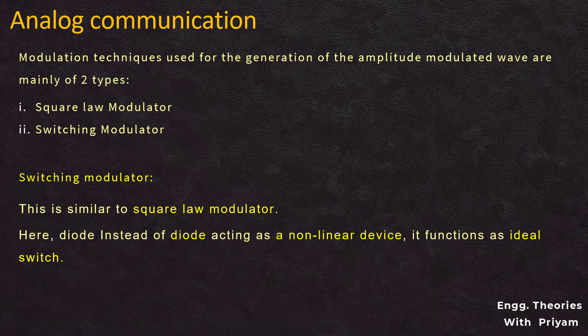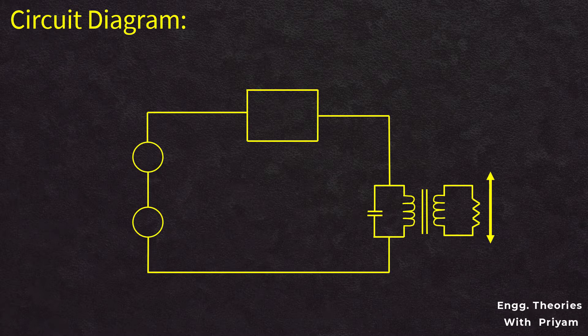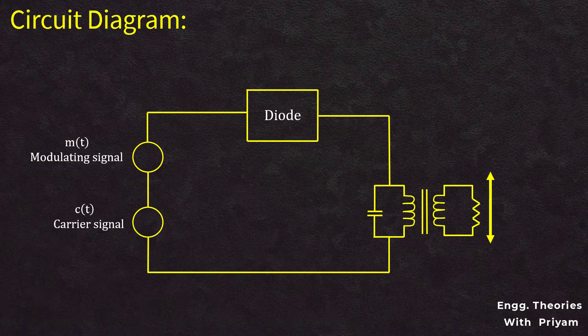Let's see the circuit diagram for the switching modulator. A switching modulator circuit contains a modulating signal source m(t) for the generation of the message signal, a carrier signal source c(t) for the generation of the carrier signal, a diode which functions as an ideal switch, and a bandpass filter for the elimination of the higher-order terms.